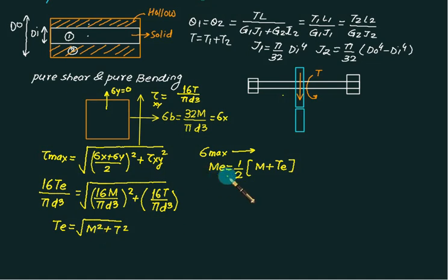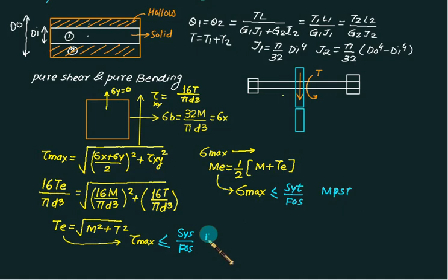If you are using MSST, τ_max is less than or equal to S_ys (yield strength in shear) divided by factor of safety. If you are using MPST (maximum principal stress theory), this value is less than S_yt divided by factor of safety. This is MPST and this is MSST.